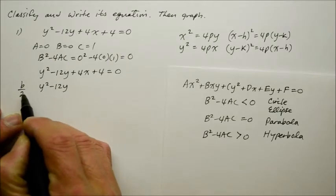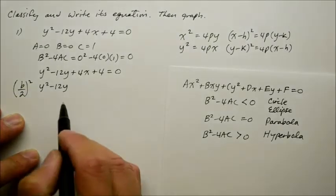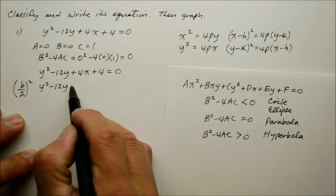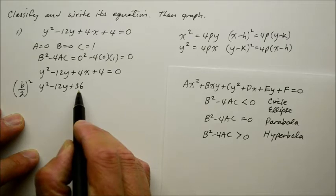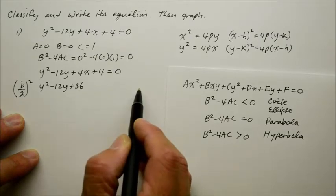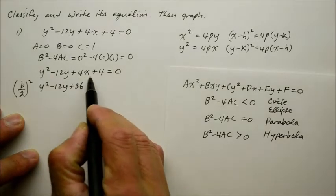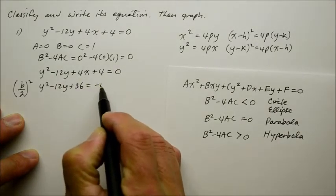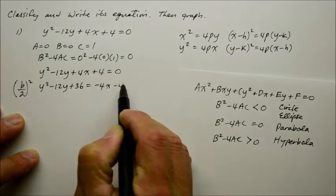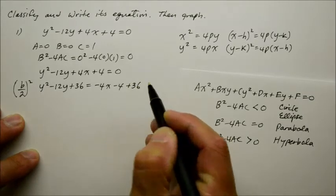Remember? Take the b, take half of it, and you square it. And that becomes a perfect square. So half of 12 is 6, square it is 36. However, whatever you did to the left side of the equation, later on you have to give it to the right side as well. But simultaneously, let me move the 4x and the 4 over at the same time. So that becomes negative 4x minus the 4, and then I'm going to add the 36 to both sides of the equation.